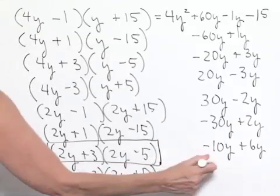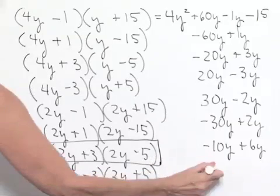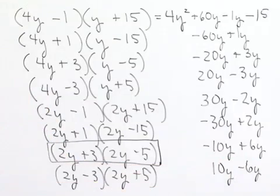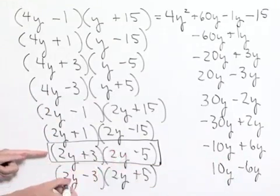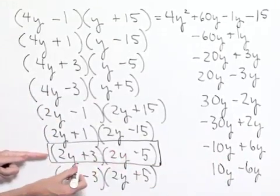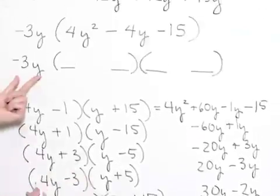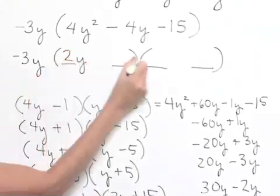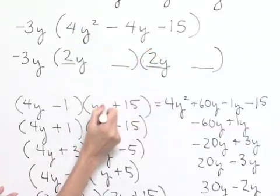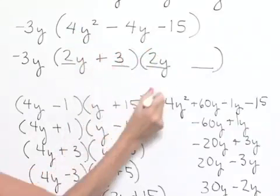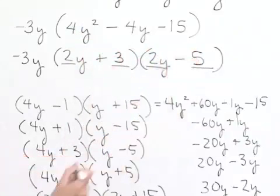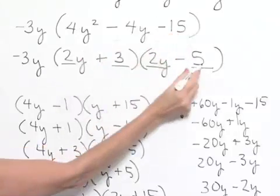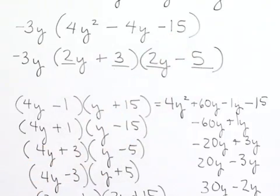Just to double-check: 2y minus 3 times 2y plus 5 would give 10y minus 6y, which is positive 4y — not negative. So 2y plus 3 times 2y minus 5 is the combination that works. Going back to our problem with negative 3y as the common factor, we write in 2y times 2y for 4y squared, with plus 3 and minus 5 to give the correct last term of negative 15, outer term of negative 10y, and inner term of positive 6y.